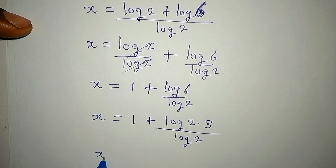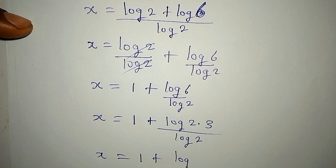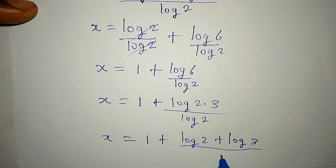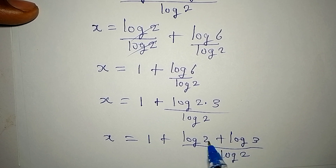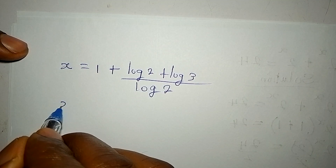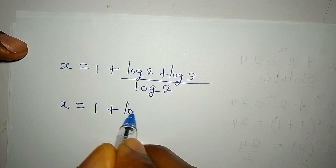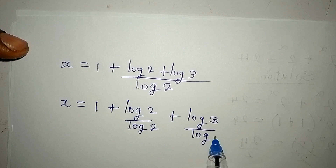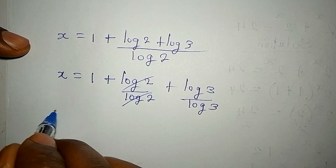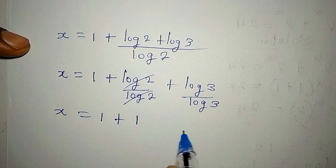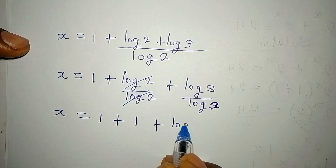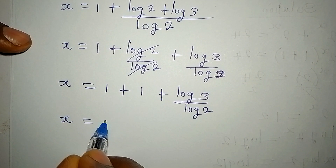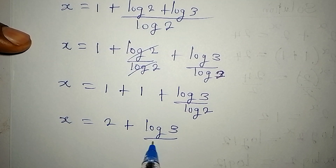Now I apply the same thing to log 6: x equals 1 plus log 2 plus log 3, all divided by log 2. We split this again just like before: x equals 1 plus log 2 over log 2, plus log 3 over log 2. Log 2 over log 2 gives 1 again, so we add the two 1s and x equals 2 plus log 3 over log 2.